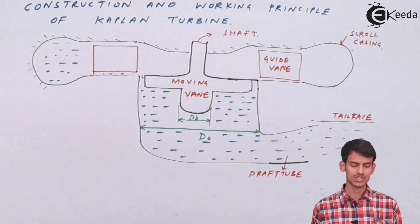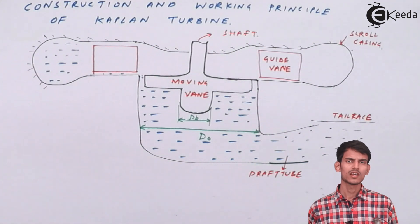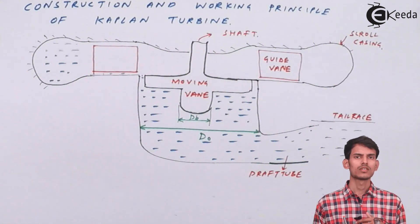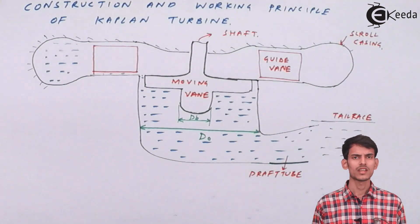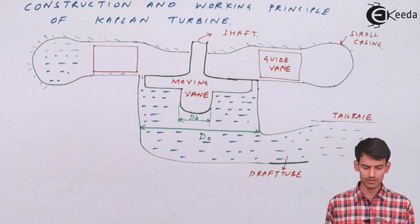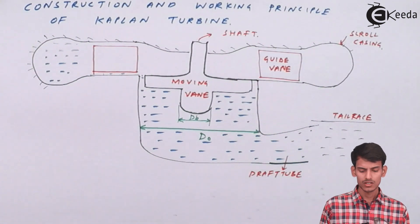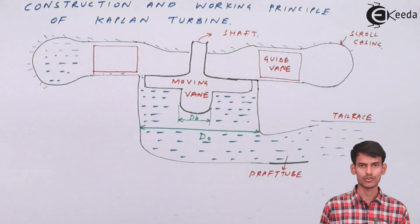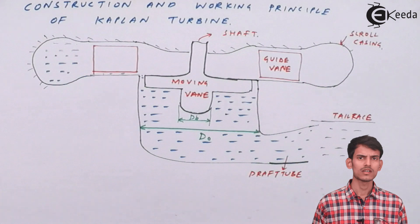The area available for discharge can be easily calculated: D0 is the outer diameter of the impeller and Db is the diameter of the hub, so the difference in areas gives the space available for water at the inlet side. The area is calculated as π/4 × (D0² − Db²). The working is mostly similar to the Francis turbine. The only difference is that the vanes here are movable — you can adjust them. There is also scroll casing, a shaft, and a draft tube. That covers the construction and working of the Kaplan turbine.